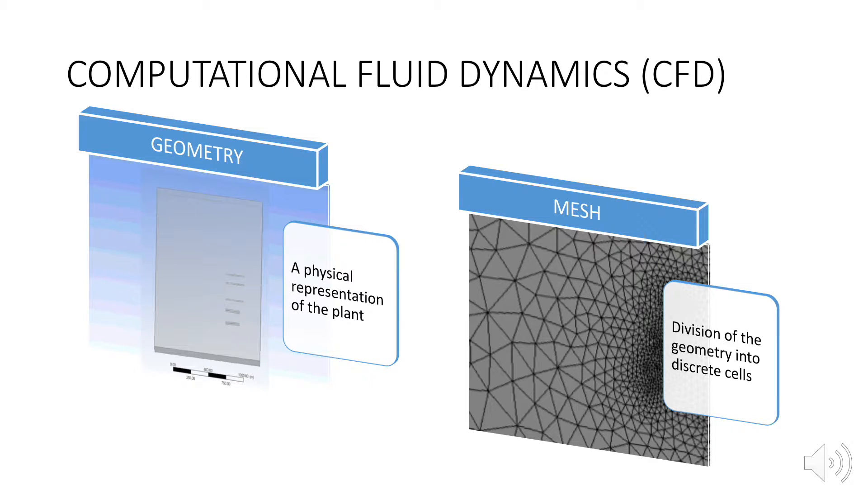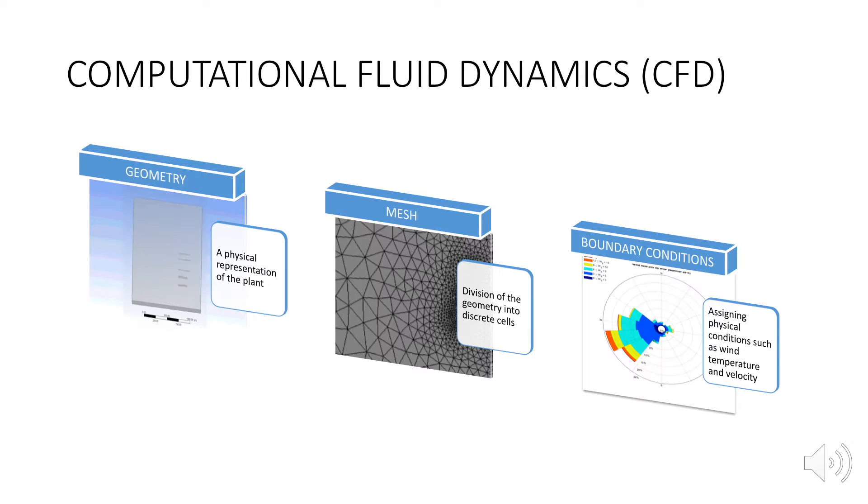My mesh consisted of 1.9 million cells and the computer solved about 36 trillion computations per simulation. Final step before processing is defining boundary conditions such as wind speed, direction and temperature.